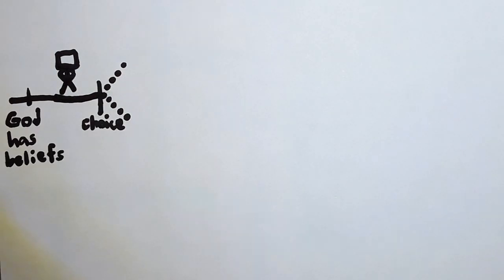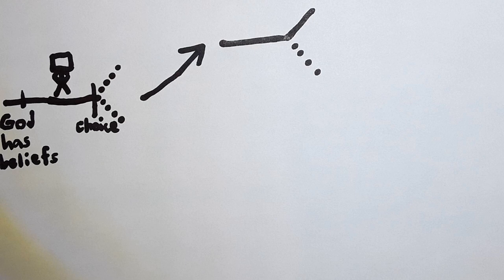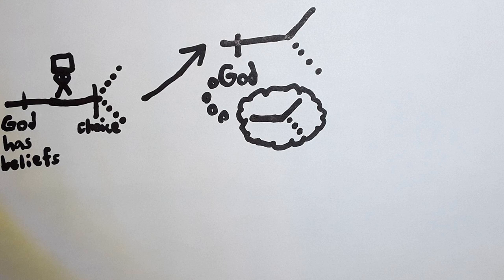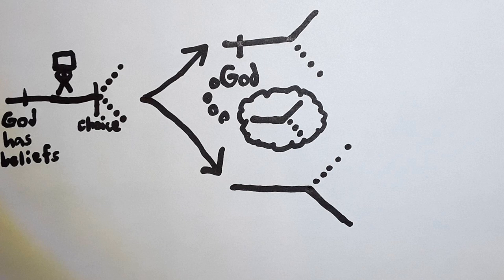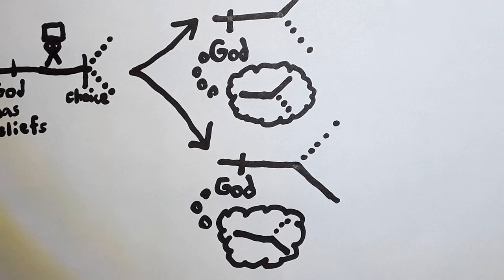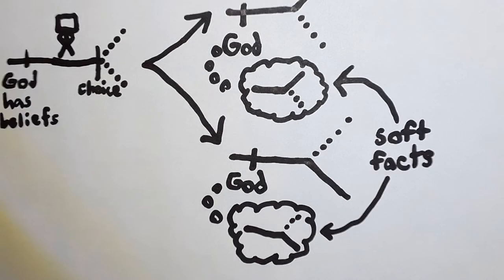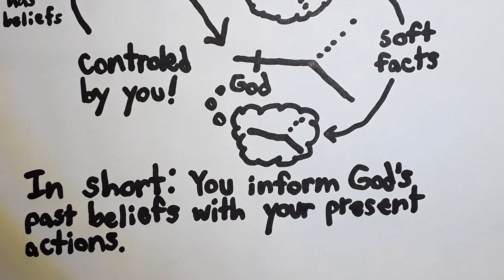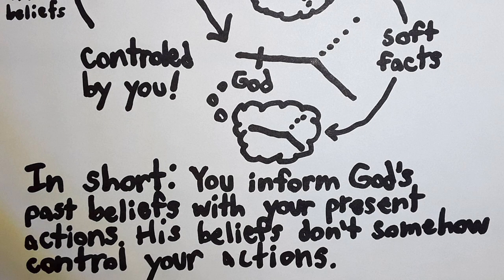God in the past already has a belief about how you will act. If, in your free will, you choose to do such and such an action, God will have always believed in the past that this is the action that you are going to make. But you totally can choose to do a different action. If you did exercise this power and choose the other course of action, then God would have believed in the past that that's the course of action you were going to take. God's beliefs are soft facts controlled by your decisions. In short, you control God's past beliefs with your present actions. God doesn't control your actions with his beliefs. And it's in virtue of this control that you possess that you can be truly free.